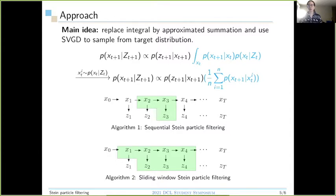Based on SVGD, we propose two algorithms to sample from posterior distribution P(Xt+1 | Zt+1). By Bayesian rule, we get the posterior formula. On the right hand side, however, this integral is intractable. We propose to use empirical approximation by replacing the integral with summation. So we can use SVGD to sample from posterior easily. This is how Algorithm 1 works.